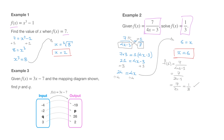Let's move on to the third and final example. We're given f of x which equals 3x minus 7, as well as the mapping diagram that we see here. We need to find p and q. Looking at this, we can see that p is an output value and q is an input value.